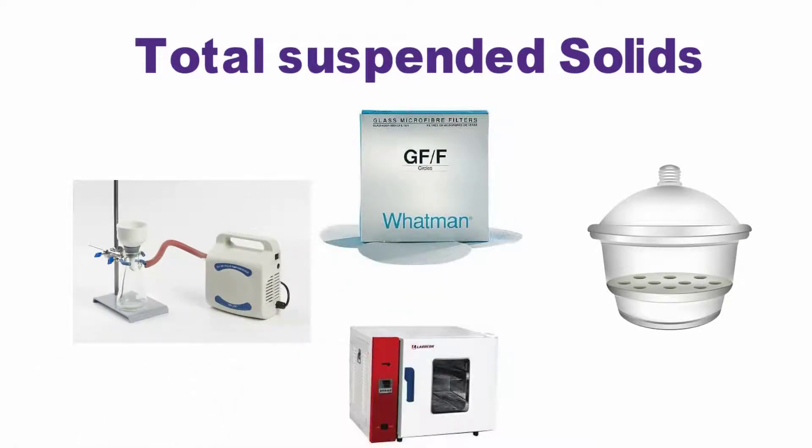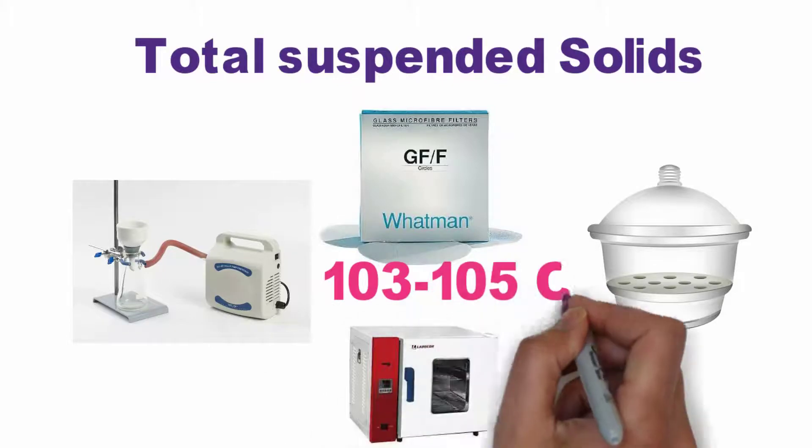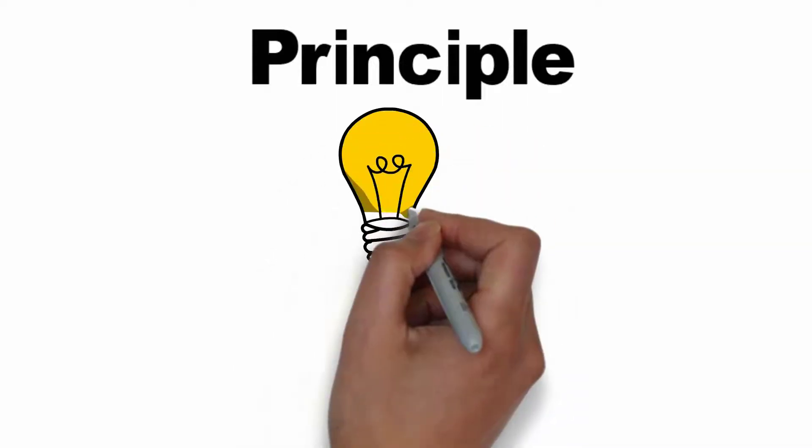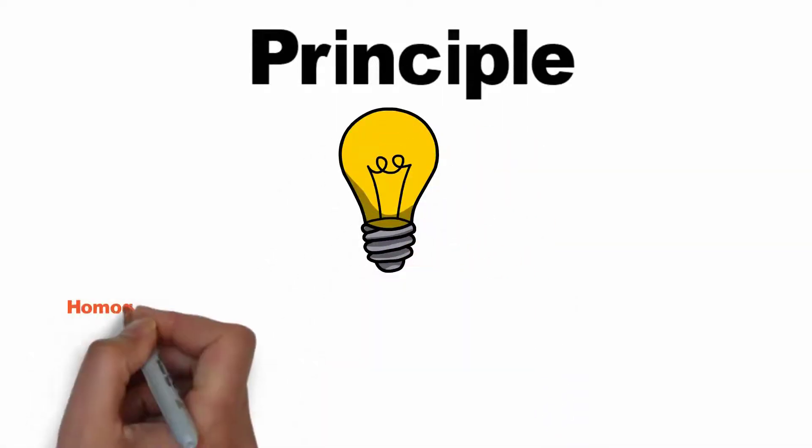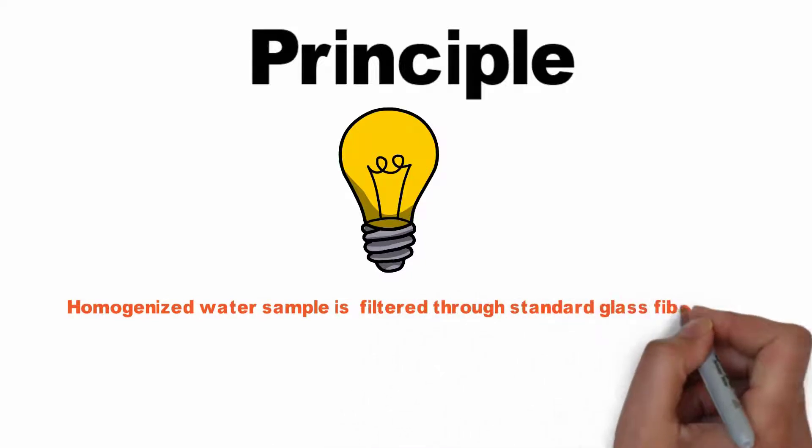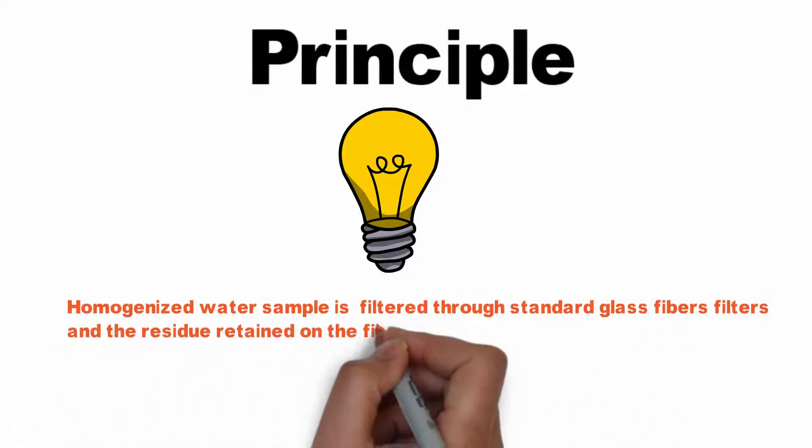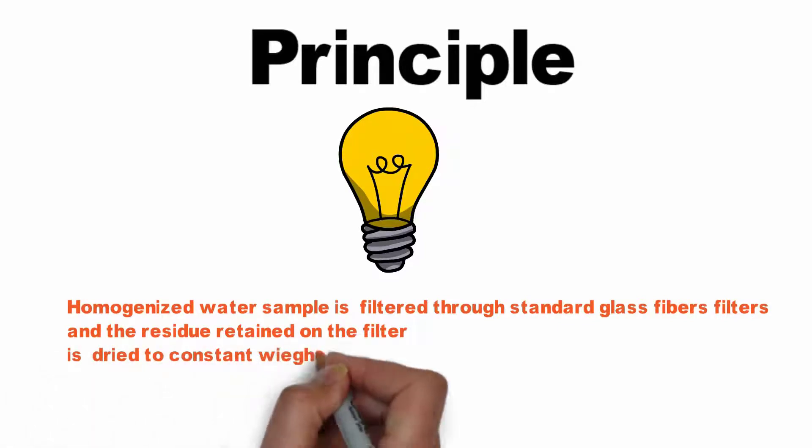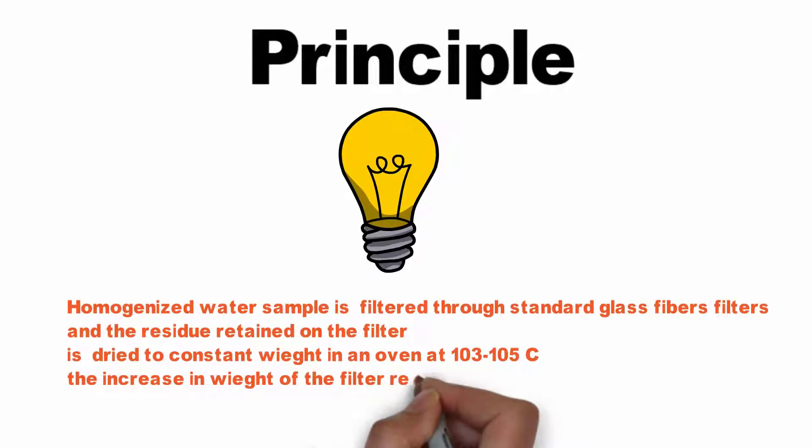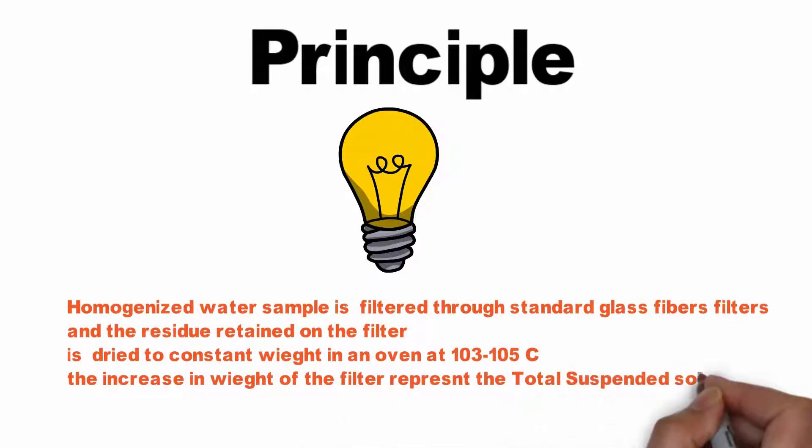Now to the principle: A homogenized water sample is filtered through a standard glass fiber filter and the residue retained on the filter is dried to a constant weight in an oven at 103 to 105 degrees Celsius. The increase in the weight of the filter represents the total suspended solids.